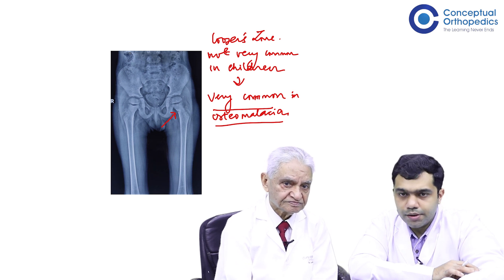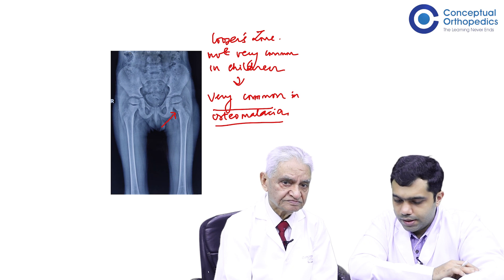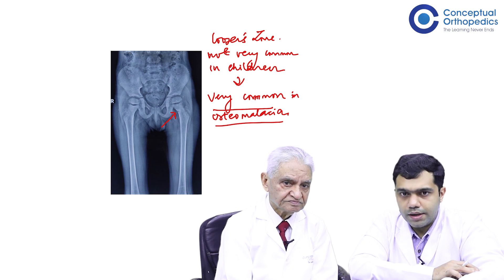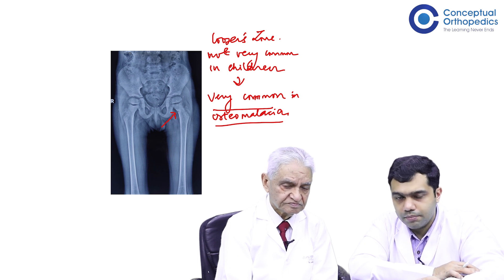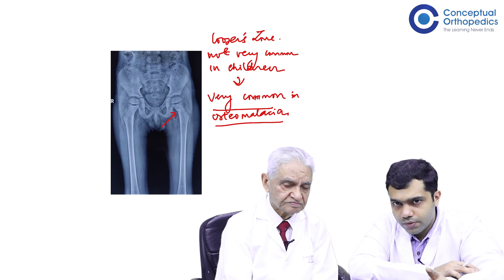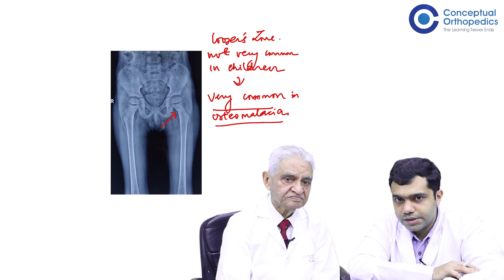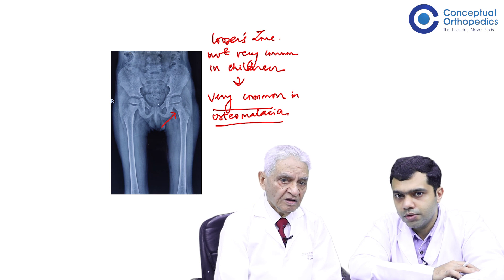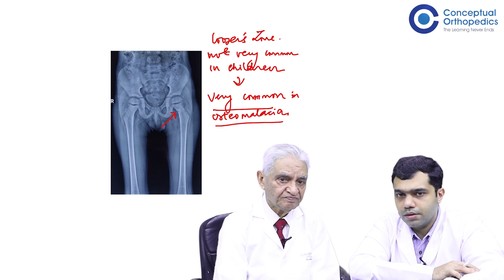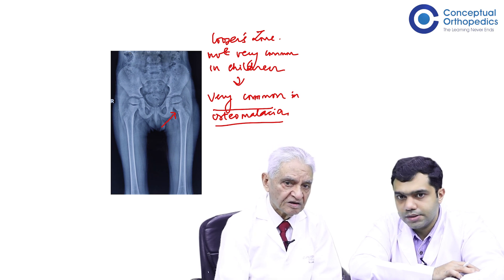In this child, the metabolic derangement is already present — either it is a vitamin D deficiency or excessive calcium is being removed from the bone to maintain serum calcium levels. So in this particular case, when you have such a looser zone, would you advise fixation in this patient or would you like to observe with treatment of vitamin D and calcium alone?